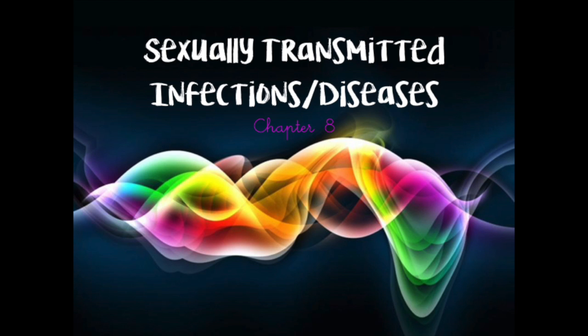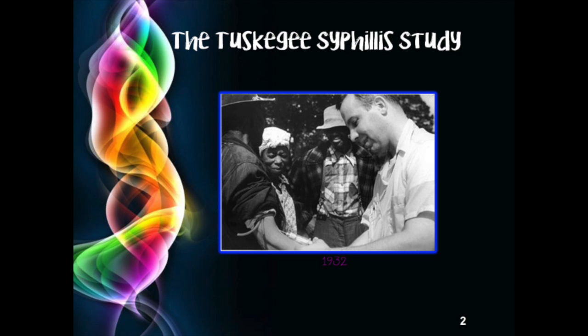Let's go ahead and start with a historical perspective on STIs. We'll begin by looking at one of the most notorious and infamous studies on STIs ever conducted in our country. This study would not be allowed legally because it was very unethical and immoral. It is referred to as the Tuskegee syphilis study, started in 1932 when the United States Public Health Service wanted to study the long-term effects of syphilis.